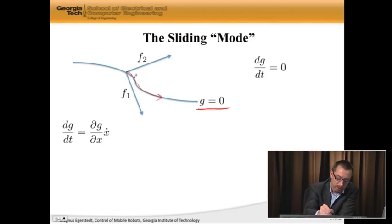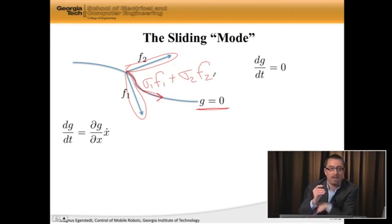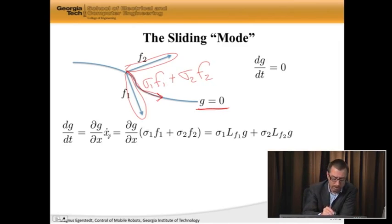So now, what is x dot along here? Well, what I'm going to postulate is that it's a combination of f2 and f1. In fact, let's say that it's equal to sigma 1 times f1 plus sigma 2 plus f2. So it's a convex combination of these two vector fields. So if I do that, I get, instead of x dot, I get this thing here, sigma 1 f1 plus sigma 2 f2.